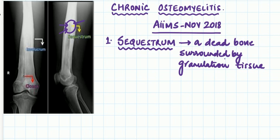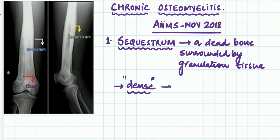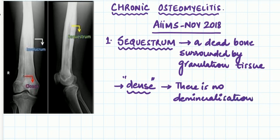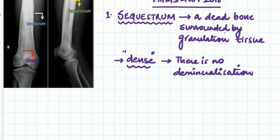Why does the sequestrum appear dense — that is, white — similar to normal bone? The density of the sequestrum is almost the same as normal bone because there is no demineralization. When the bone was alive, continuous blood flow allowed continuous mineral exchange. Once the bone is dead, there is no more blood supply, so whatever minerals were there are now trapped — that is the sequestrum.